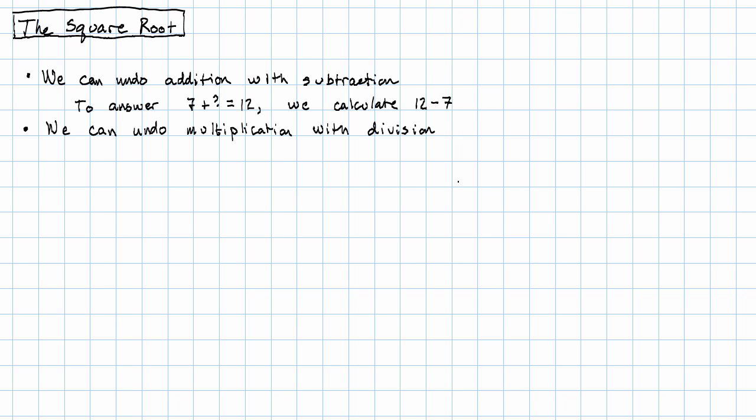Multiplication, we can undo with division. That is, to answer the question 8 times what equals 48, we calculate 48 divided by 8.